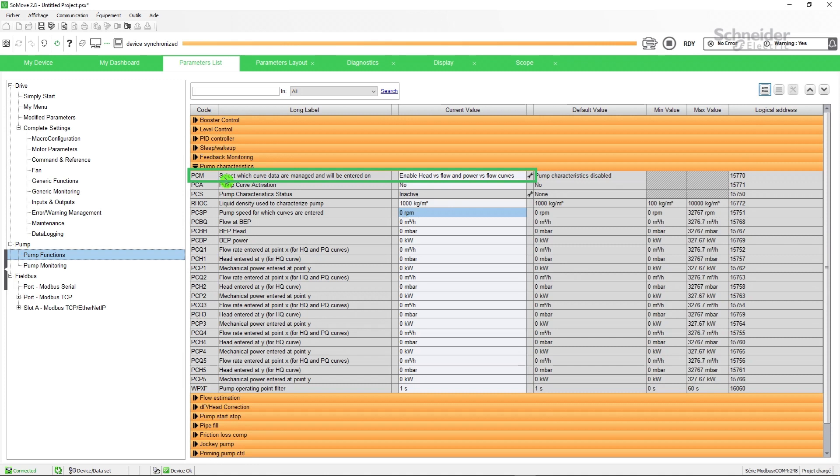The mode parameter used to select the curve data is set to enable head versus flow and power versus flow curves. Enter the values of the pump speed for which curves are entered. Enter the values of the flow rate, the head, and the power for the BEP and the five points you have selected on the curves.